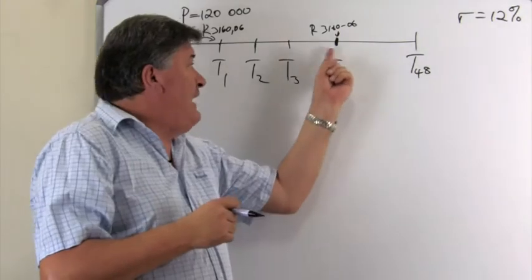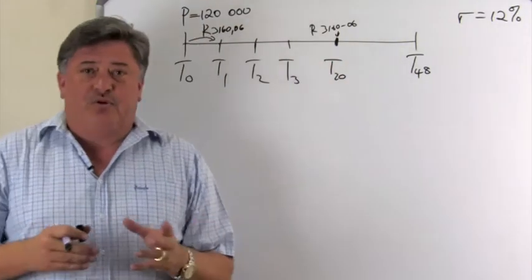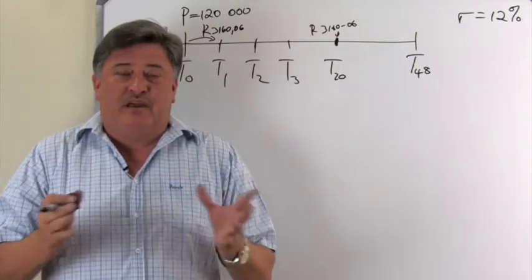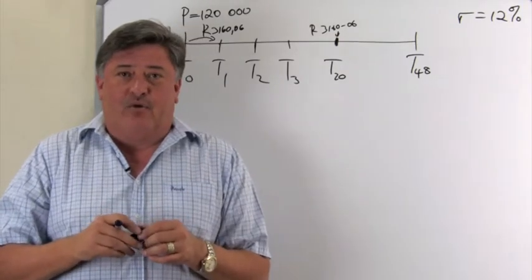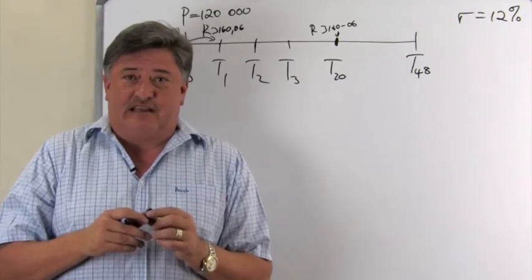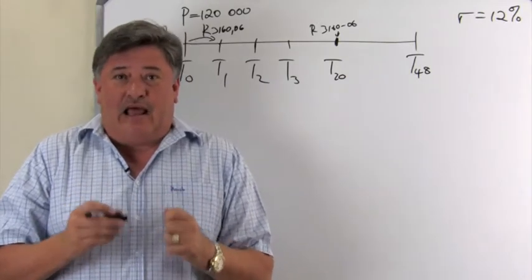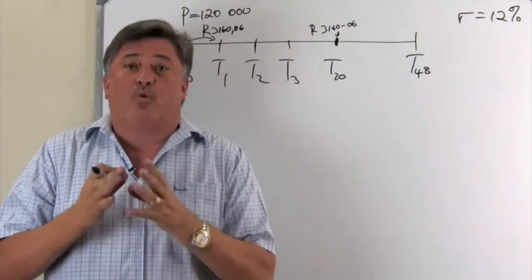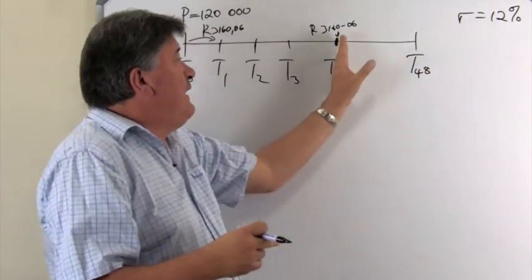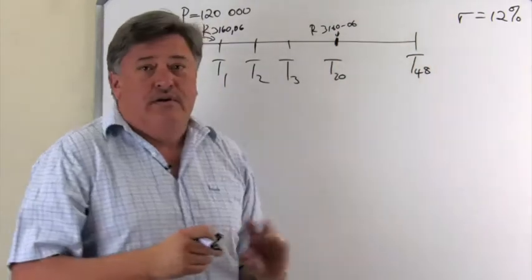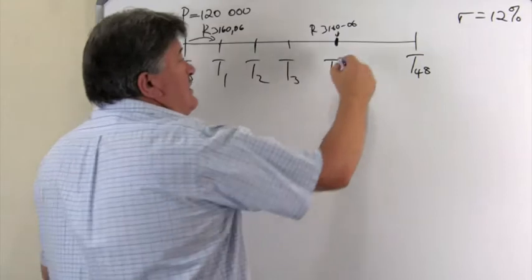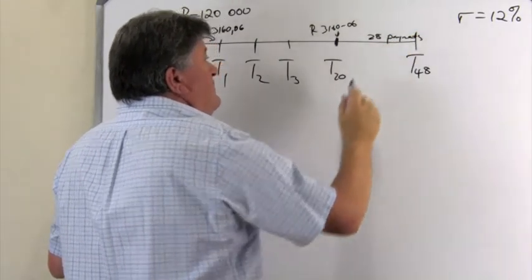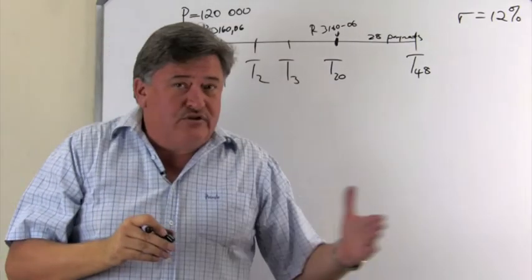Now, after she paid that amount, maybe she was lucky to inherit money or to win the lotto or maybe someone gave her or maybe she received a bonus at her work. And now she wants to pay off the loan at once. So she don't want to make these payments anymore.